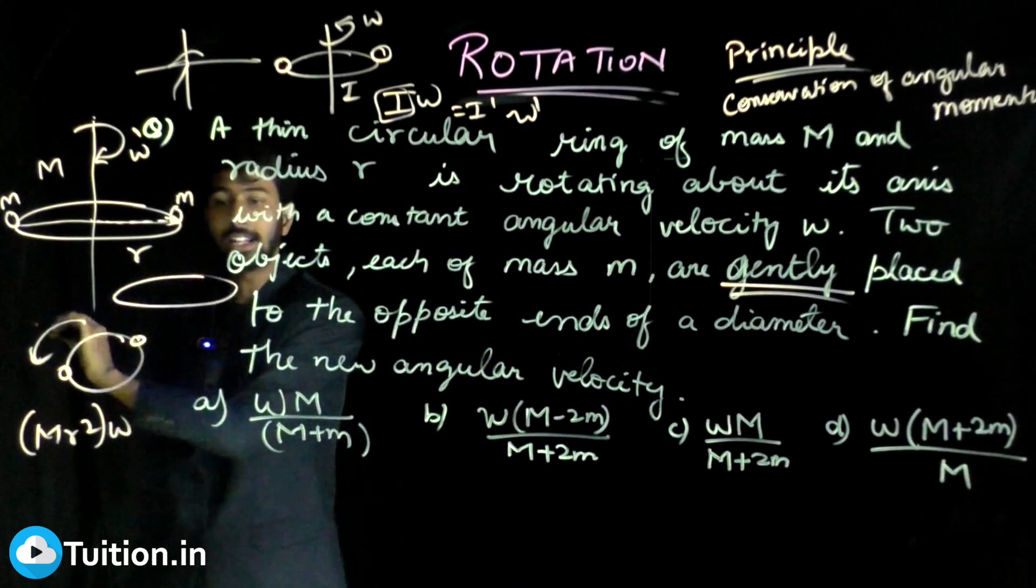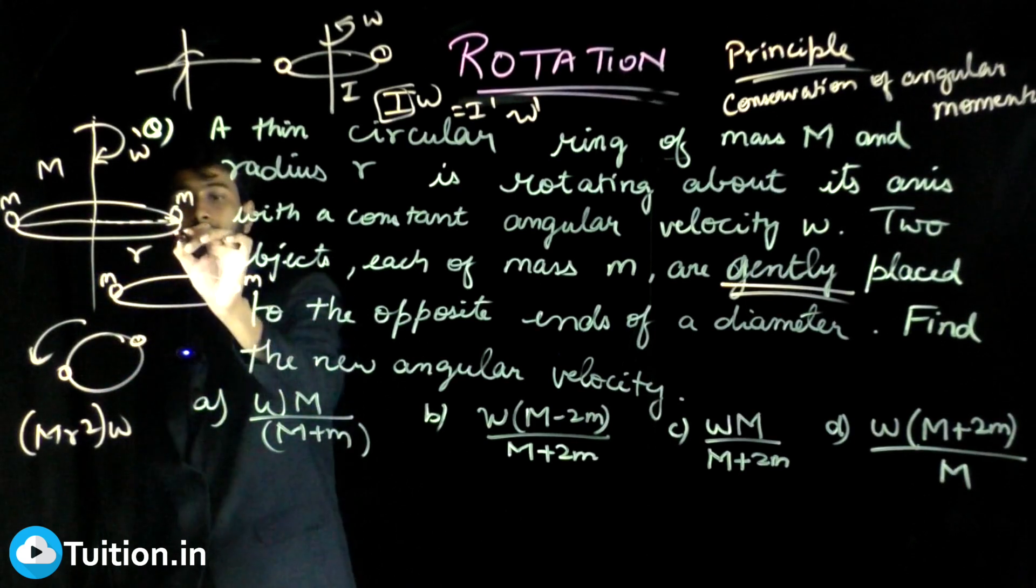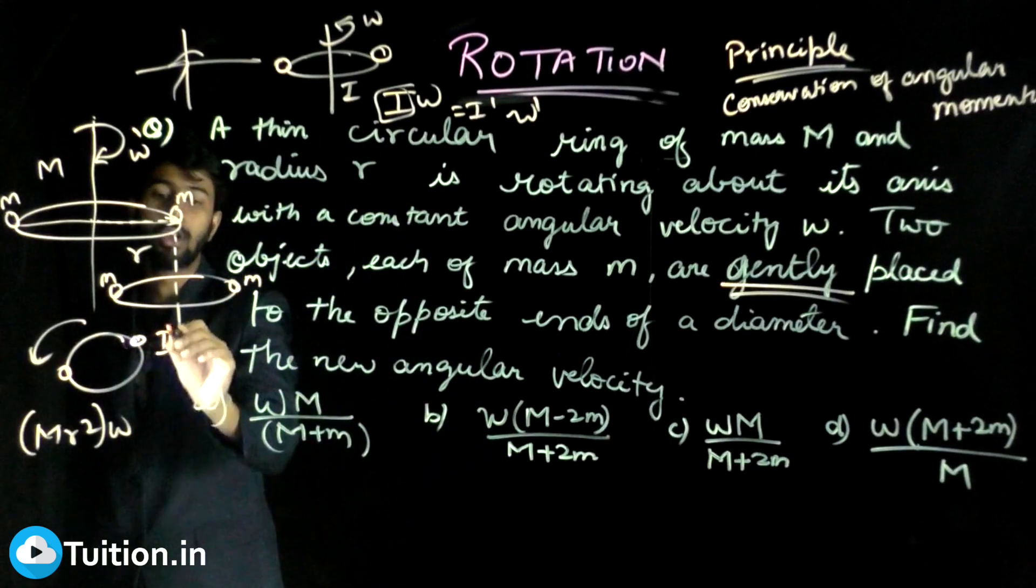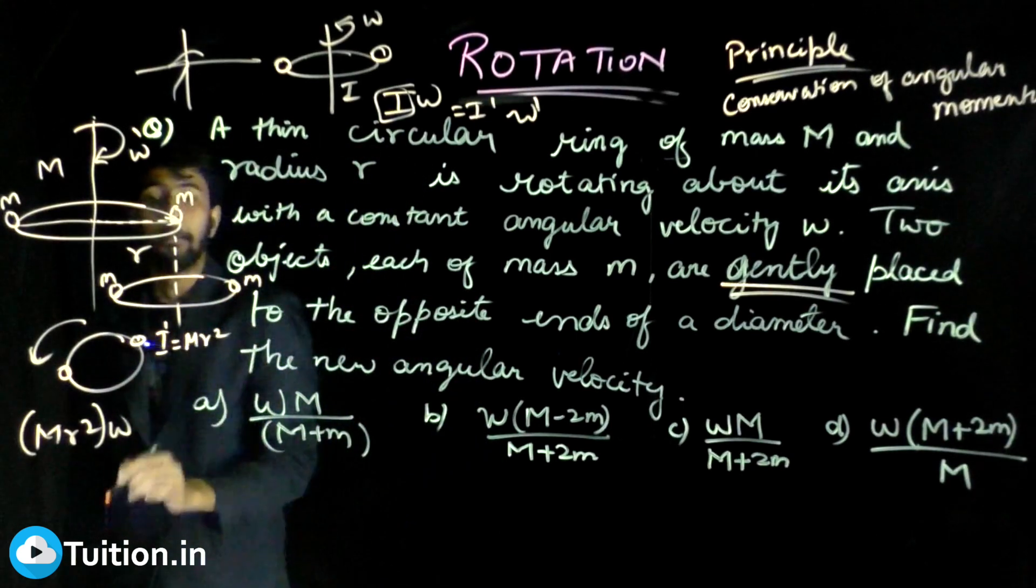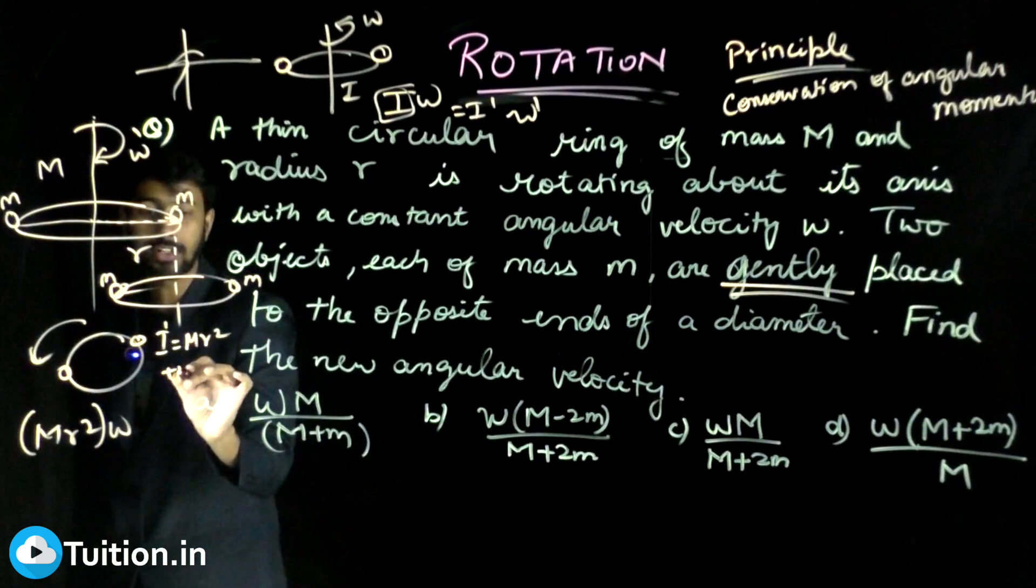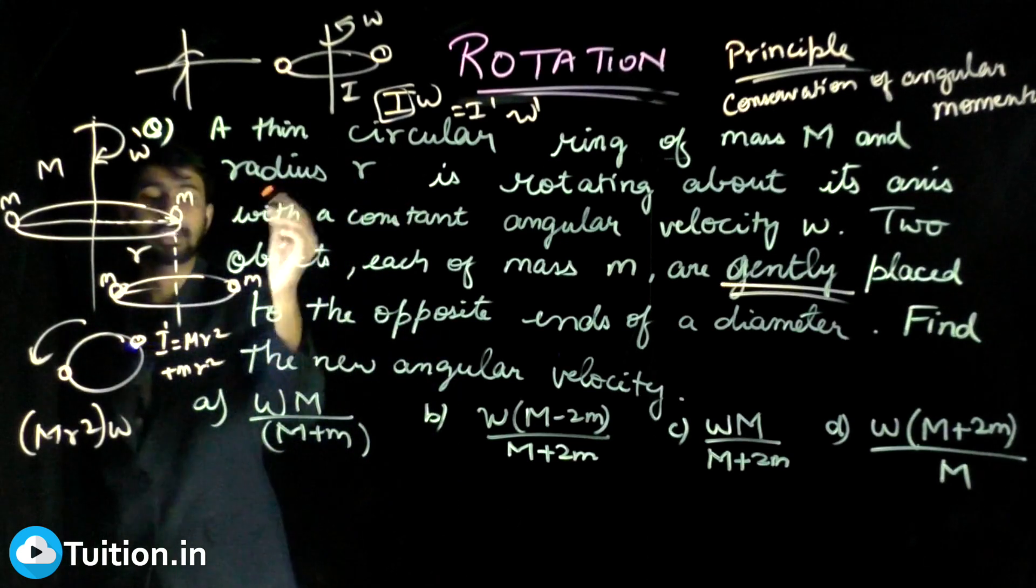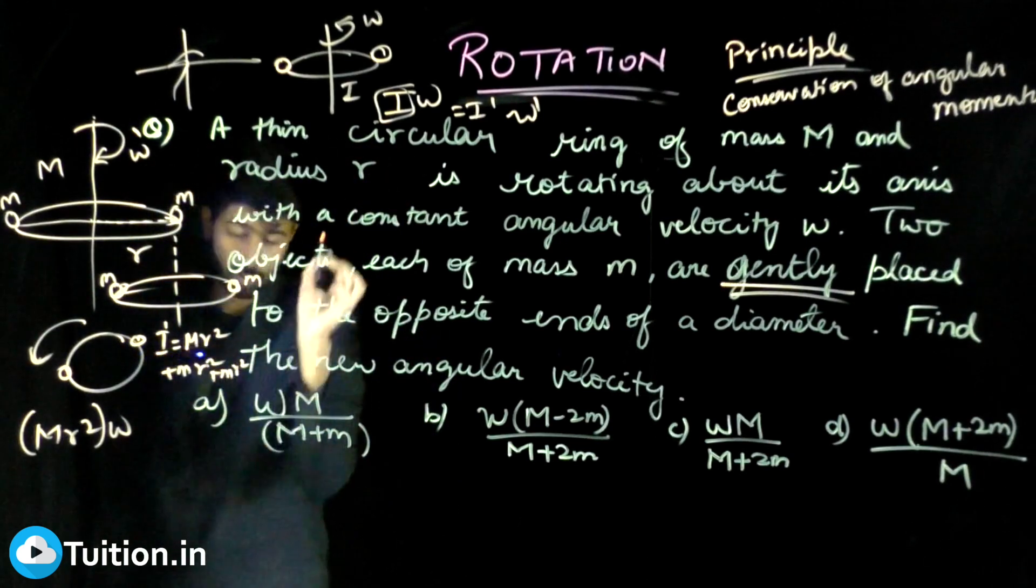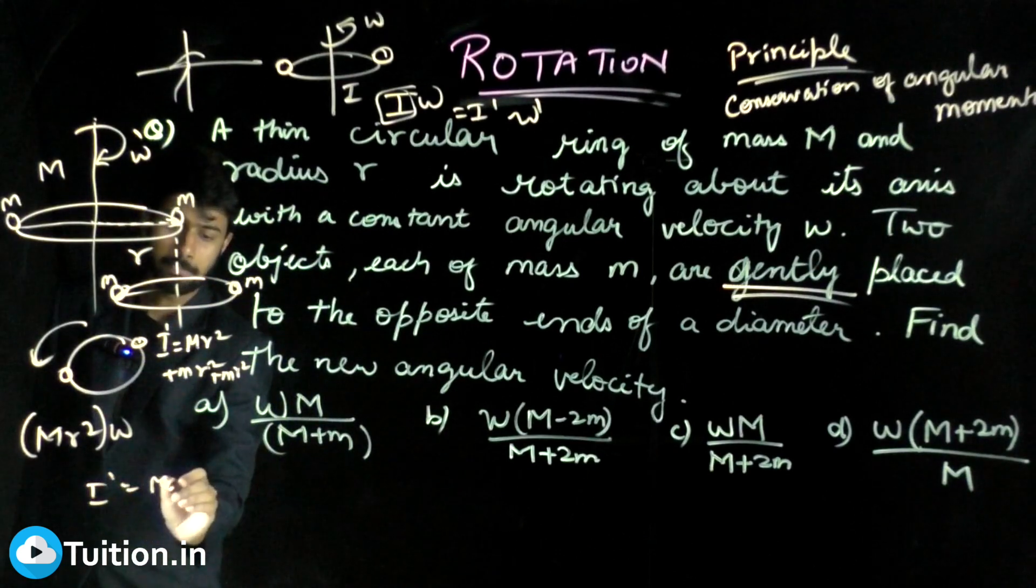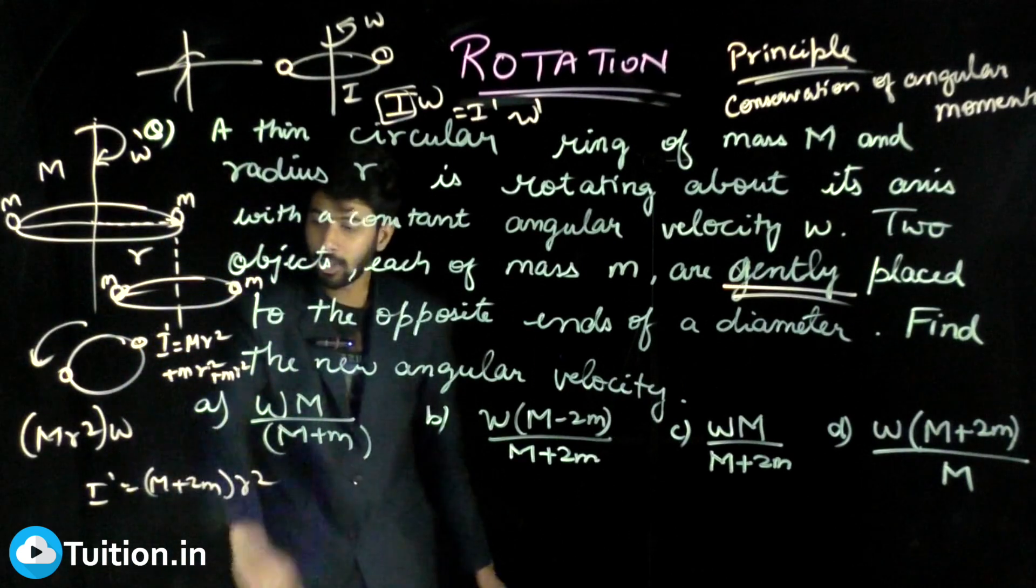If I have this ring now and if I place two masses of mass m gently, what will be the new moment of inertia I dash? First of all, moment of inertia of the ring will be there as it is, plus this is a mass m which is at a distance r, so it will have its moment of inertia mr², and this also is a mass m which is at a distance r, so it will also have its own moment of inertia mr². So I dash is nothing but m plus 2m into r².